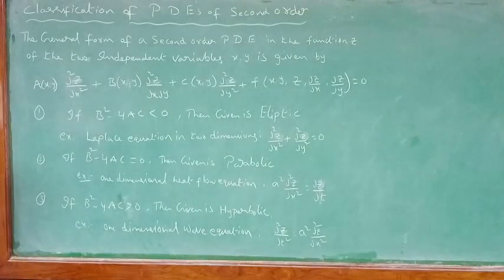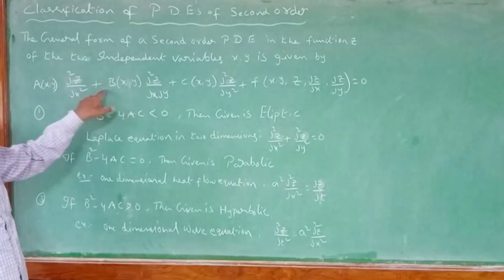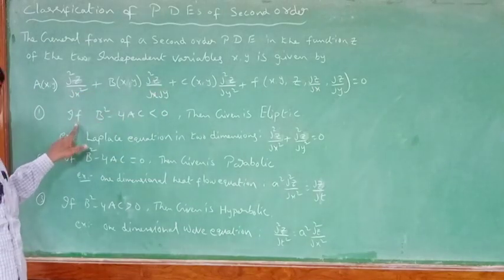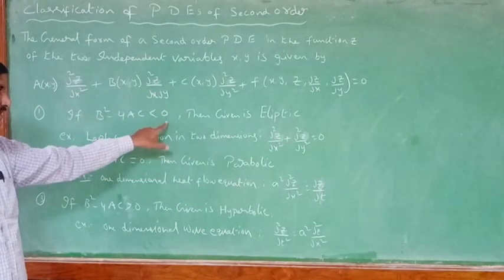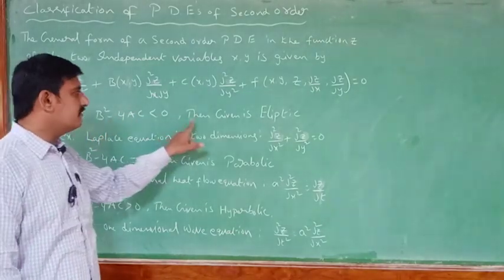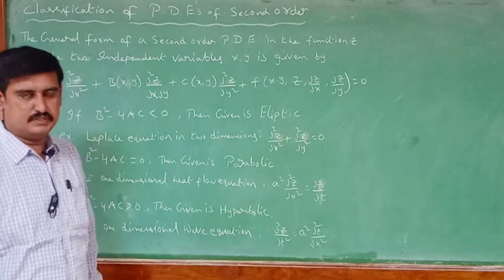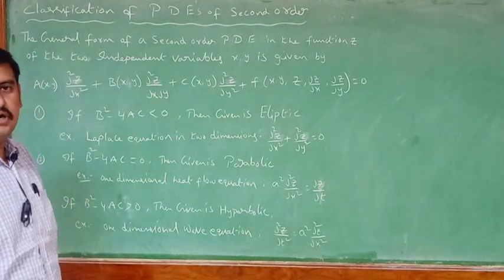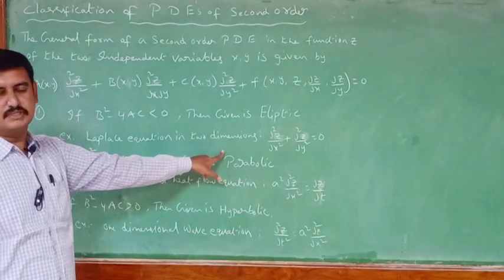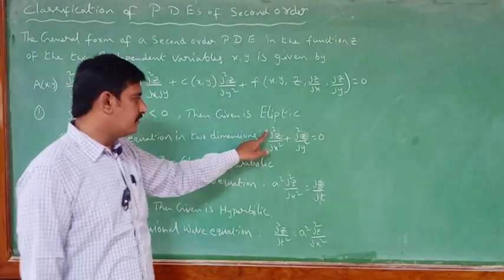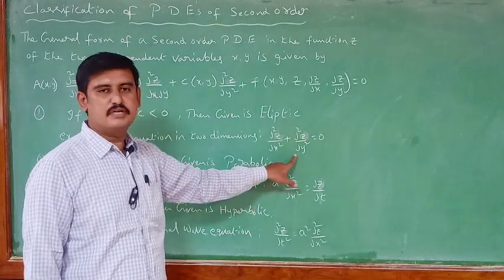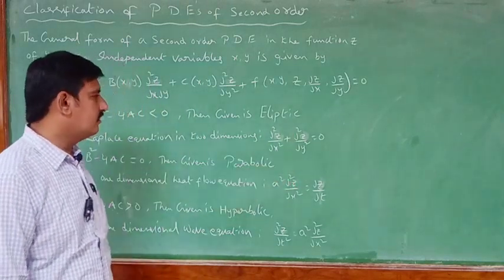Now, how to classify this equation? Based on the A, B, C values: if b² − 4ac is less than 0, then the given equation is called an elliptic equation. The example for this is the Laplace equation in two dimensions: ∂²z/∂x² + ∂²z/∂y² = 0.